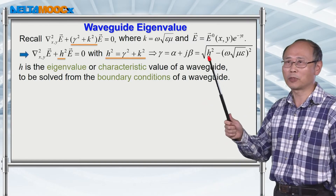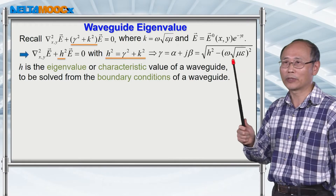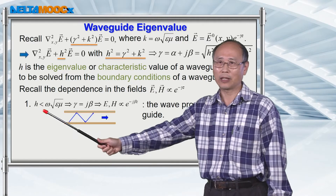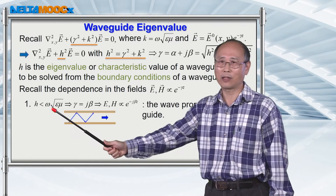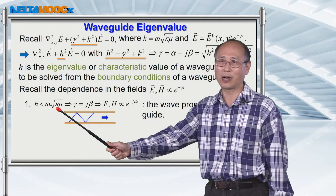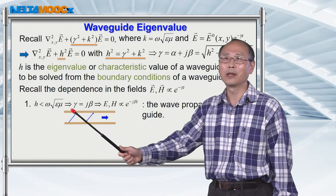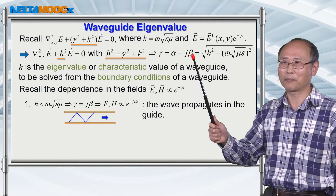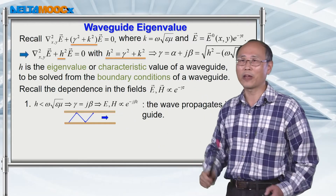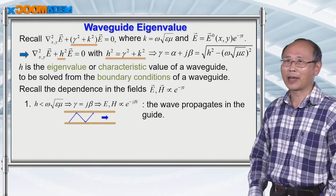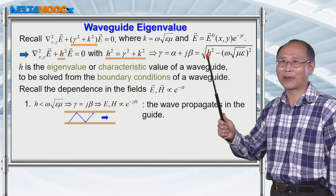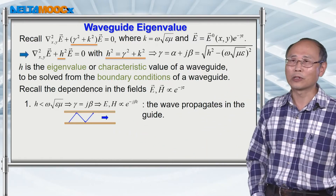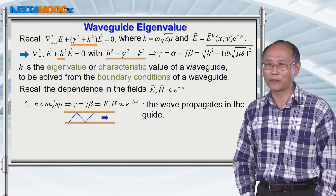Let's make a comparison between this eigenvalue h and omega times the square root of mu epsilon. If the eigenvalue h is less than omega multiplied with the square root of epsilon mu, then beta will be a real value, meaning that the wave can propagate. This h value, which is the eigenvalue of the system, will later be solved from the boundary conditions of the waveguide.